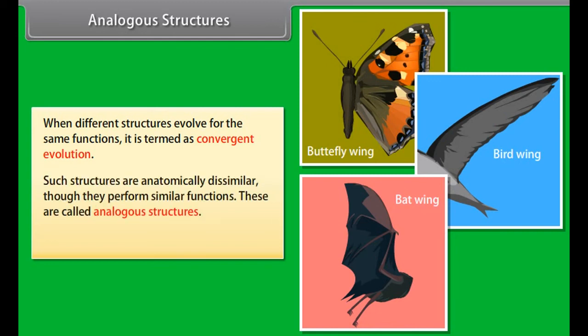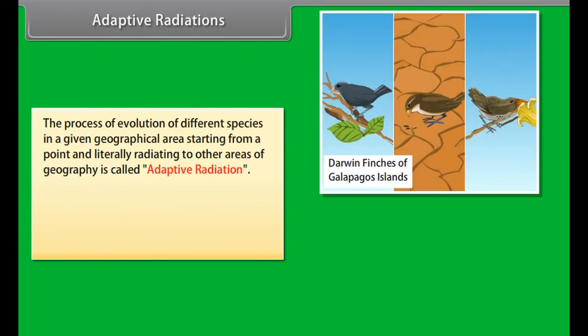When same structures develop along different directions due to adaptations to different needs, it is termed as divergent evolution. Such structures are called homologous structures. Example: bones or forelimbs of human beings, whales and bats are homologous.